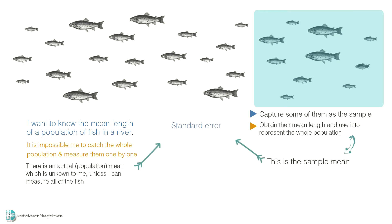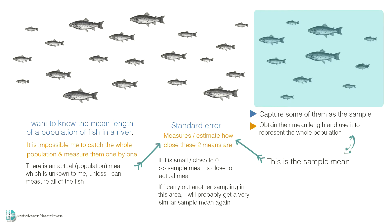The standard error is a measurement of how close my sample mean is to the actual mean which I do not know. If the standard error is very small or very close to zero, it means that my sample mean is pretty close to the actual mean. If I carry out another sampling at the same area, it is very likely that the new sample mean will be pretty much the same as the first sample mean.